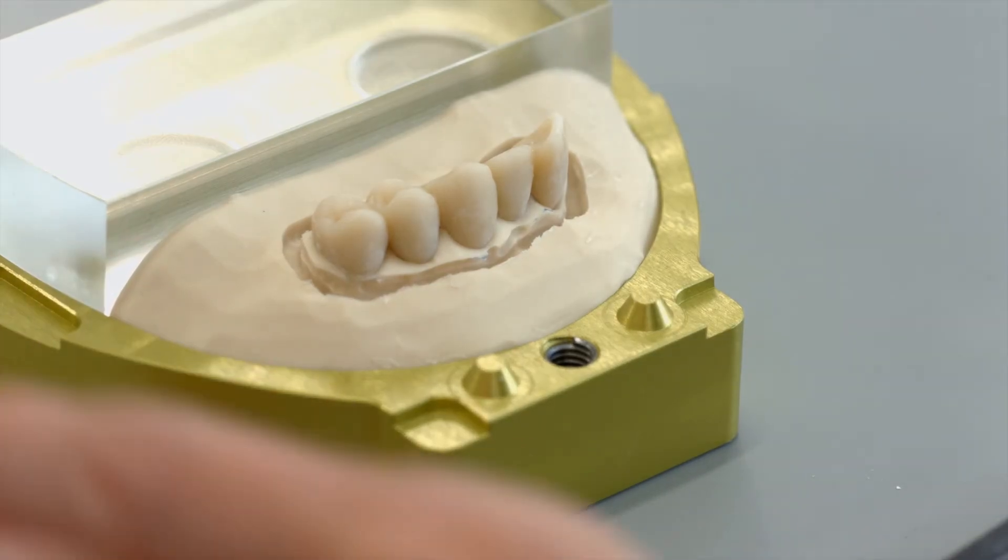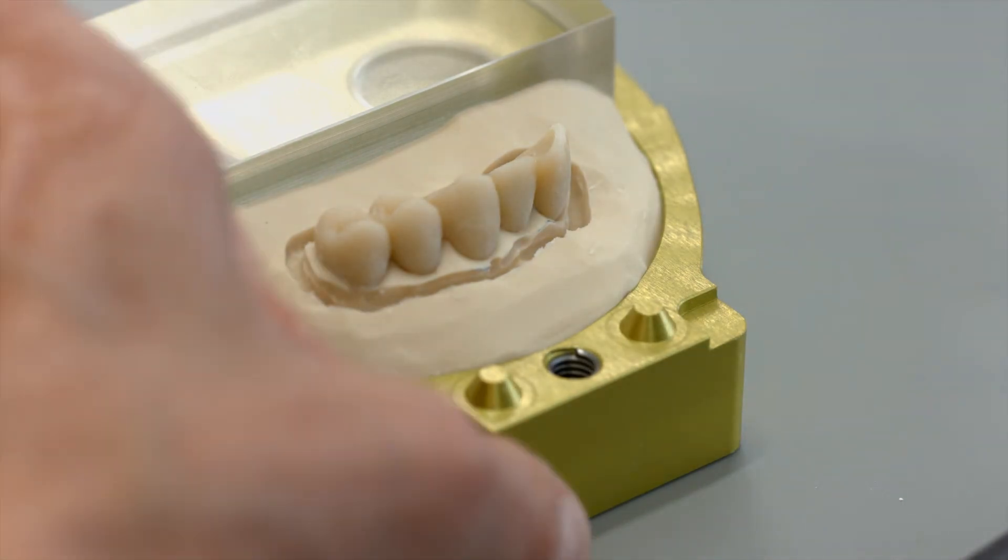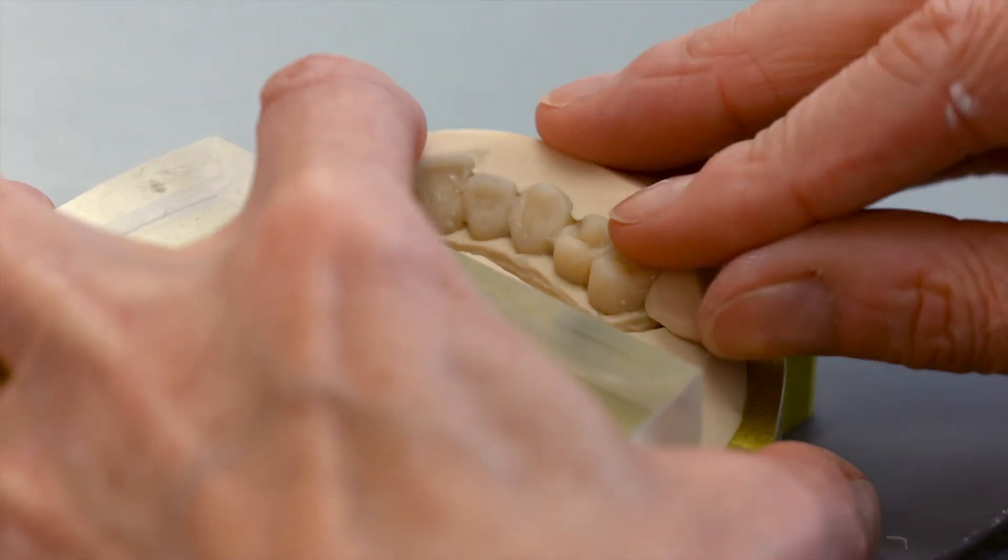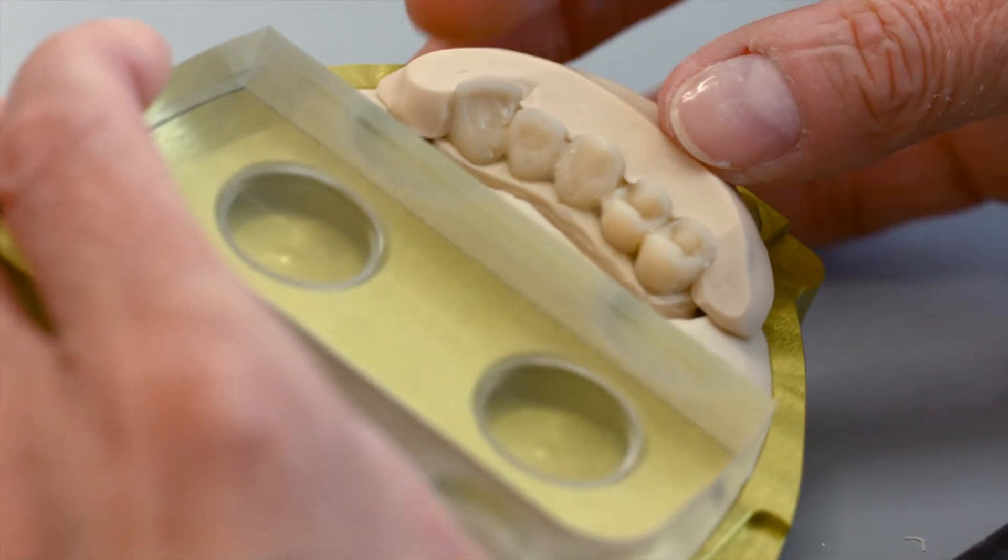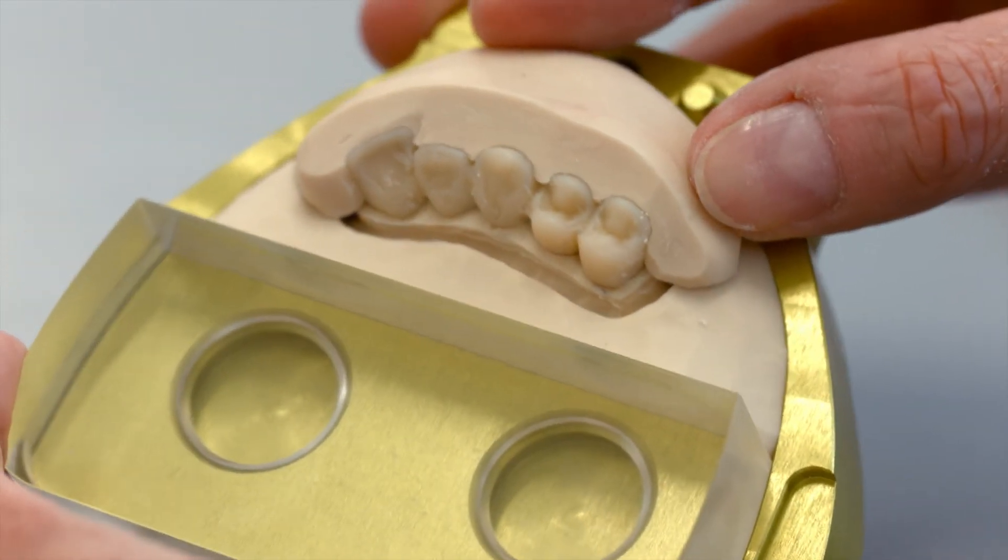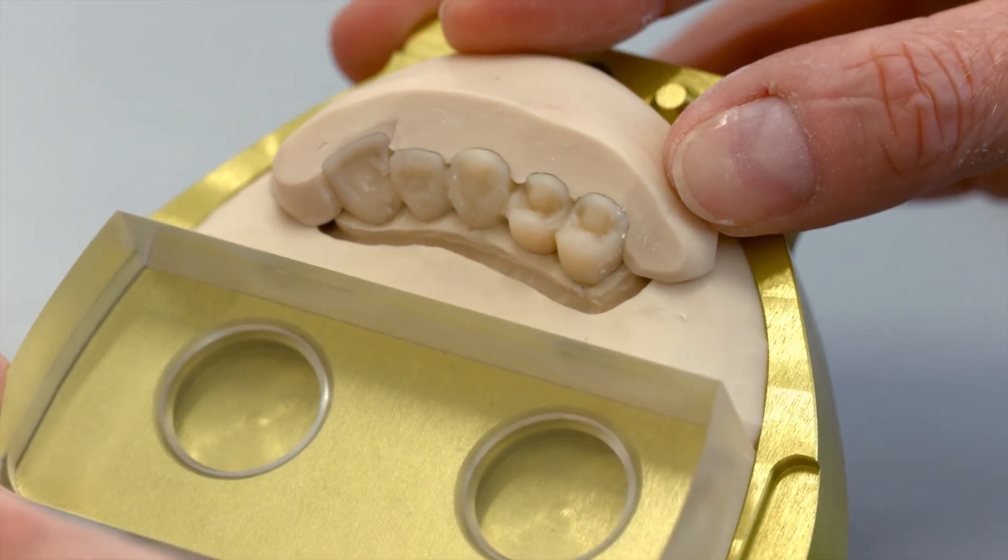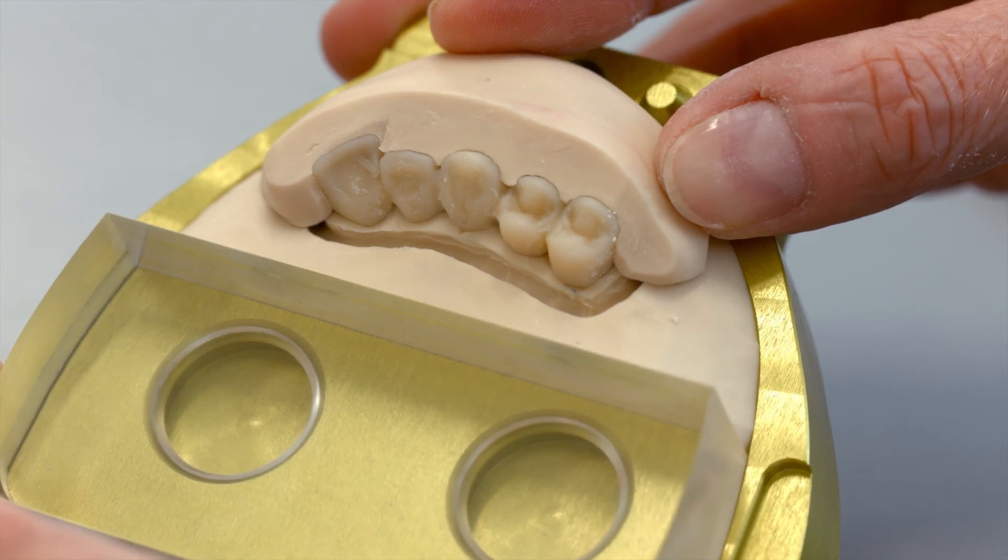Place the bridge on the silicone base. Check the Denton press results against the silicone matrix. If you wish, you can try in the restoration to check the aesthetics and function of the pressed Denton material.